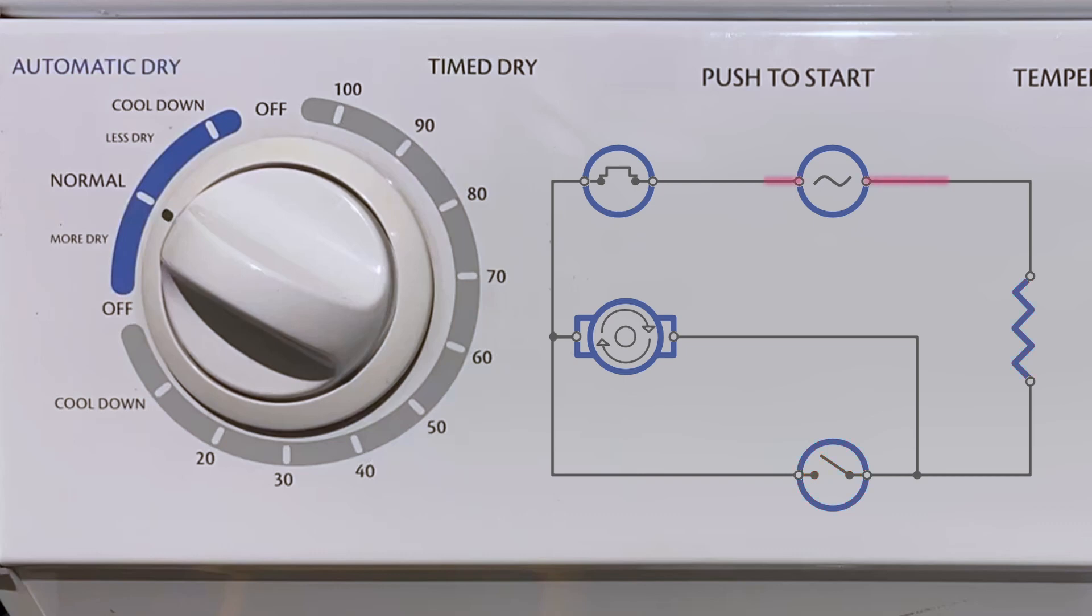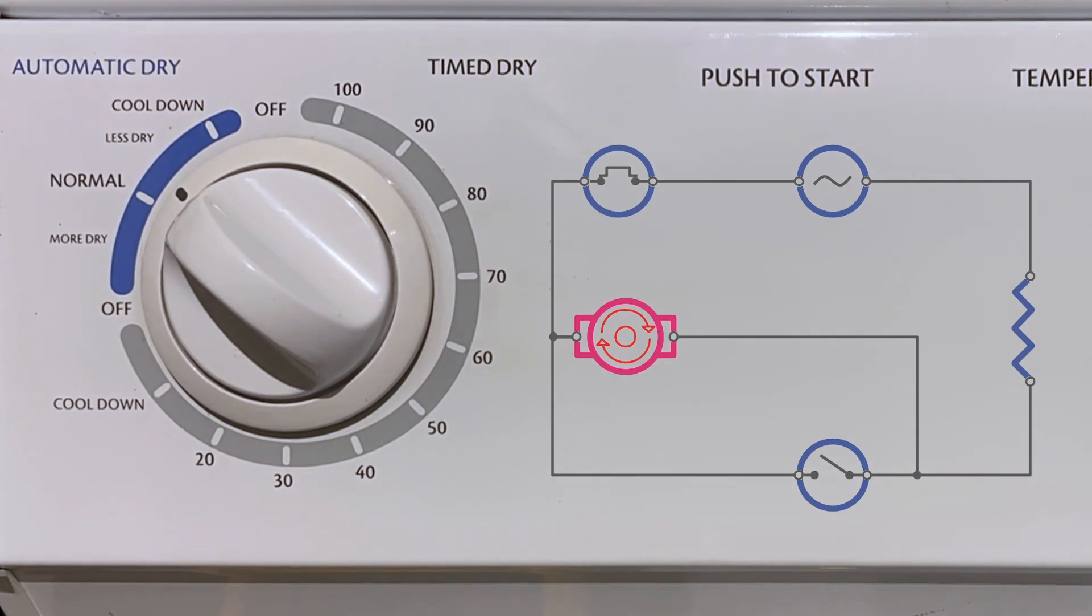The heating element will turn off, but the motor will now see line voltage through the heating element. Since the heating element is basically just a long piece of coiled wire, it'll happily pass the tiny amount of current required to run the motor. So in auto dry mode, the knob only advances when the heating element is off and stops turning when the heating element is on.